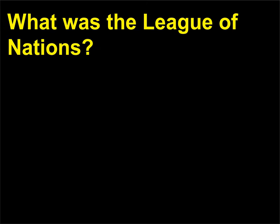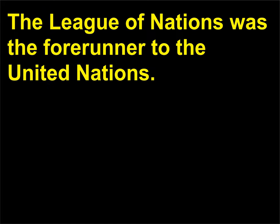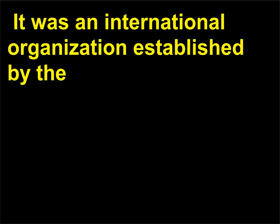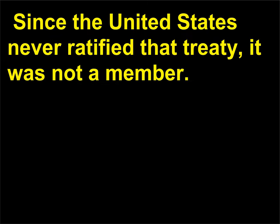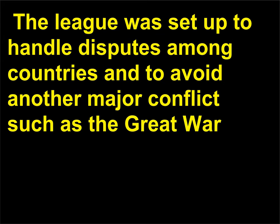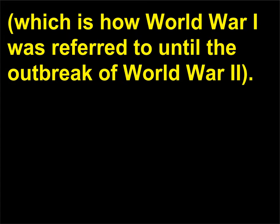What was the League of Nations? The League of Nations was the forerunner to the United Nations. It was an international organization established by the Treaty of Versailles at the end of World War I, 1914–18. Since the United States never ratified that treaty, it was not a member. The League was set up to handle disputes among countries and to avoid another major conflict such as the Great War — which is how World War I was referred to until the outbreak of World War II.